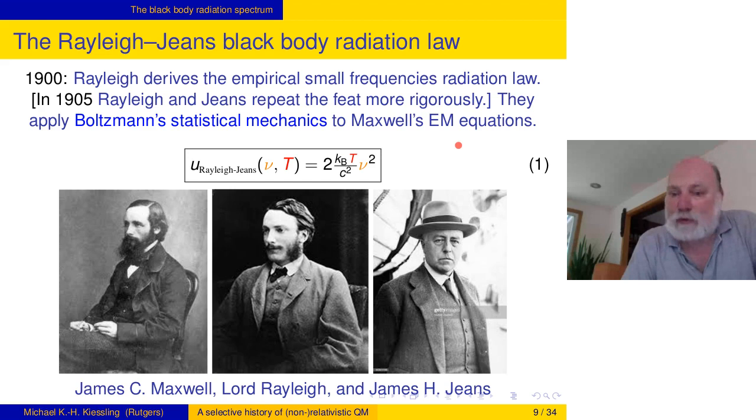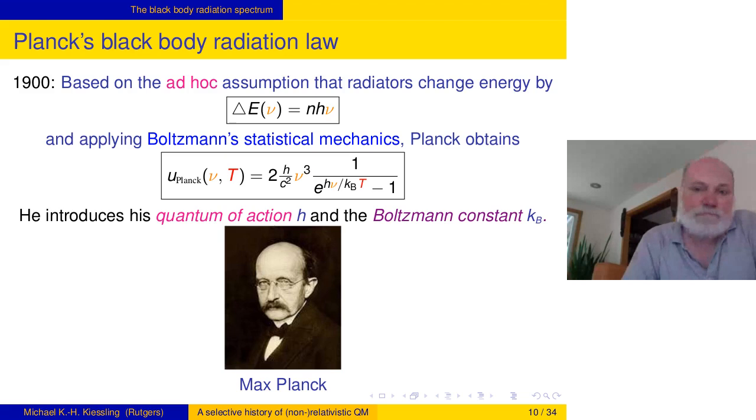Max Planck decided maybe one can interpolate between the two regimes. Here's his interpolation formula. It is nu cubed, and when this exponent here is very large, you can ignore the minus one, and it becomes Wien's law for large frequency. On the other hand, when you make that exponent very small, you can make a Taylor series. You get just h nu over k t downstairs, and then you subtract the one, you flip it up, it kills one power of nu, it brings up the t, so you get nu squared t. He interpolates between both regimes, looks at the empirical data, and finds this matches fantastically.